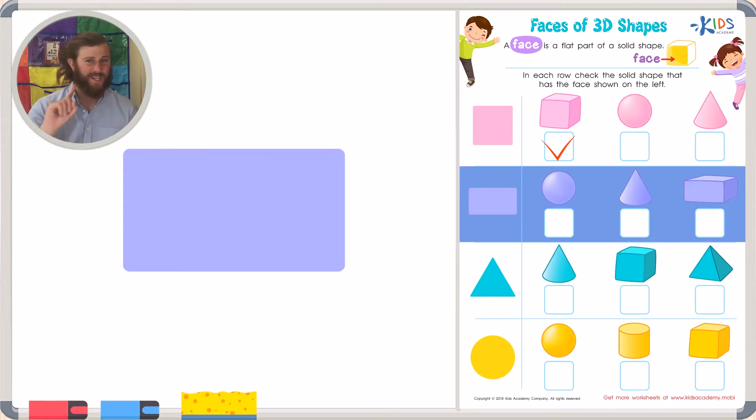Our last shape is known as a rectangular prism. Do you see any rectangular faces on this shape? I do! I think this rectangular prism has rectangular faces. They even have similarities in their name. Let's go ahead and check this shape because I see this rectangular face in this rectangular prism.